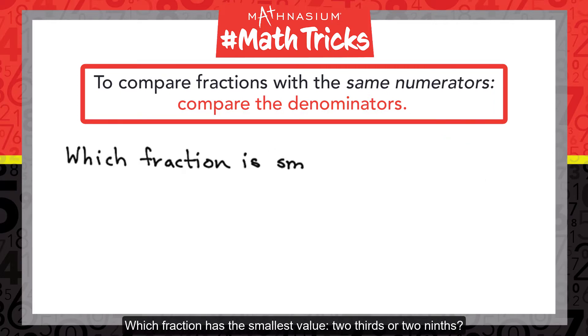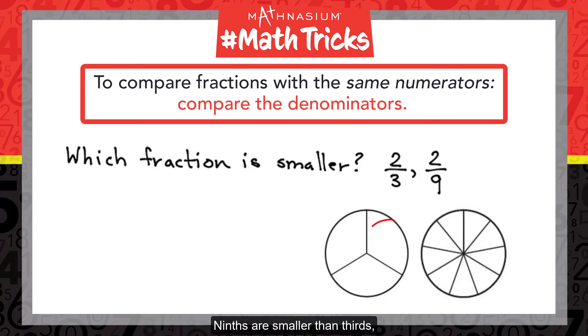Which fraction has the smallest value: 2 3rds or 2 9ths? 9ths are smaller than 3rds, and so 2 9ths is smaller than 2 3rds.